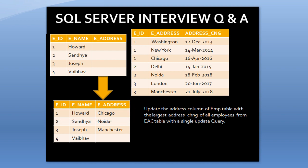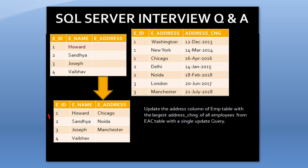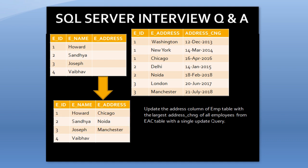For employee ID 2, employee name is Sandhya, and it has two rows in the employee address change table: Delhi and Noida. The address change date for Delhi is 14th January 2015 and for Noida is 18th February 2018. The 18th of February 2018 is the maximum, so address Noida will be picked and updated in the employee table. The question is: how can we write a single UPDATE statement to update the address column for all employees using the latest address change date?